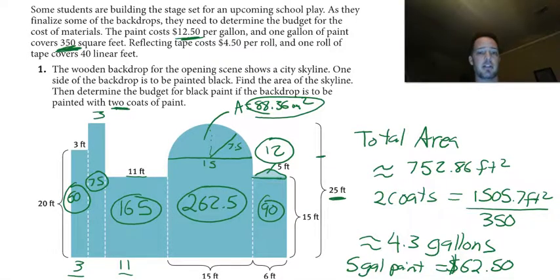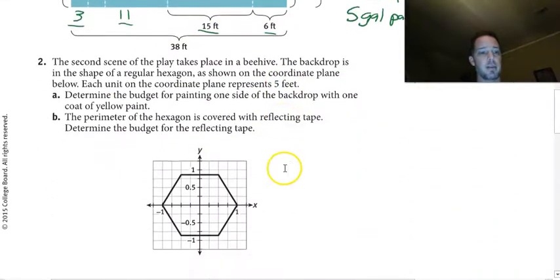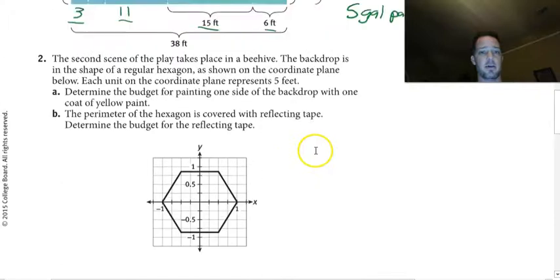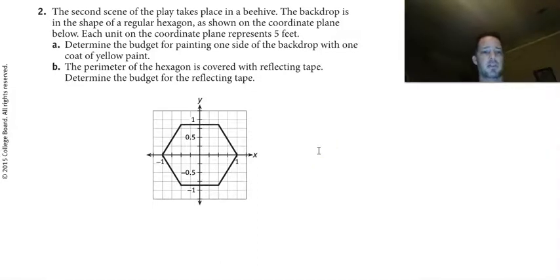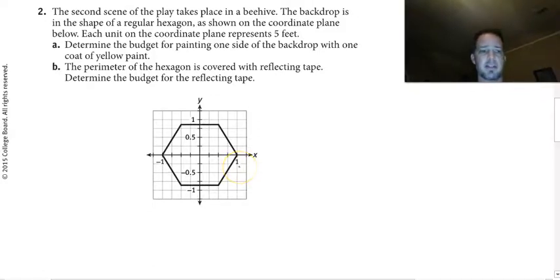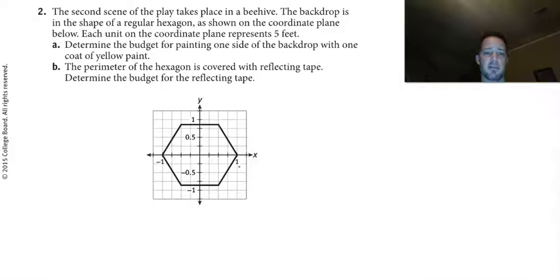For the next section, the backdrop is shaped like a regular hexagon shown on a coordinate plane. Each unit on the coordinate plane represents five feet. We need to determine the budget for painting one side with yellow paint, and the perimeter will be covered with reflecting tape.